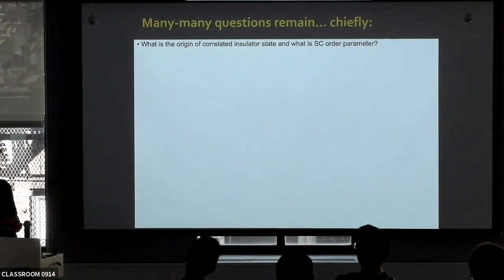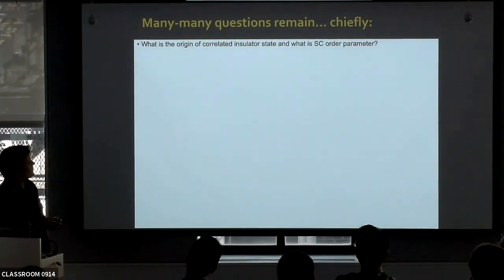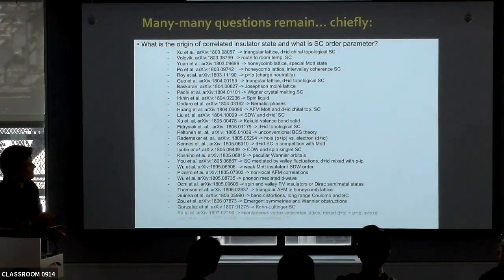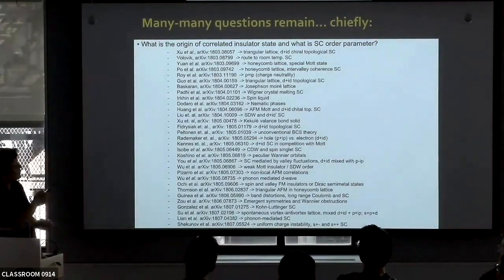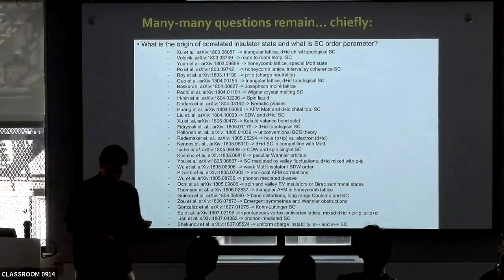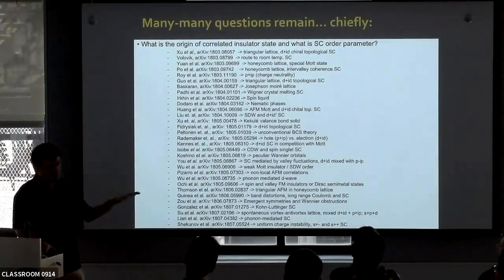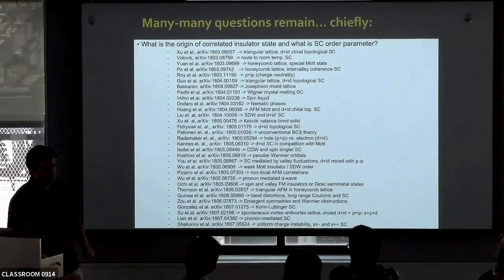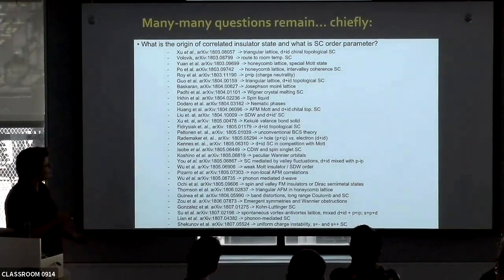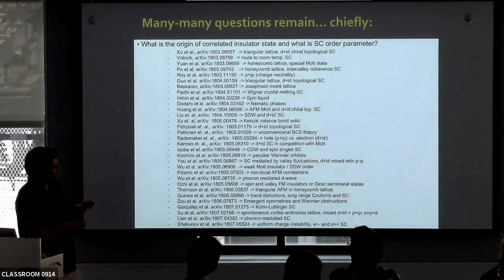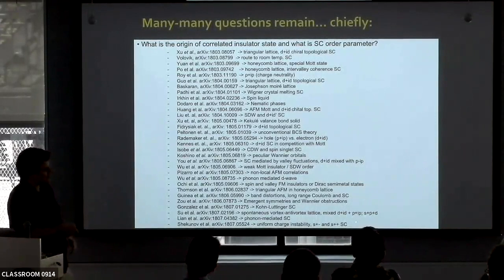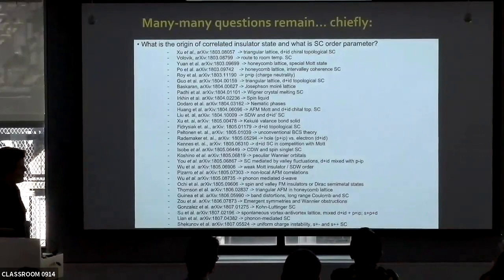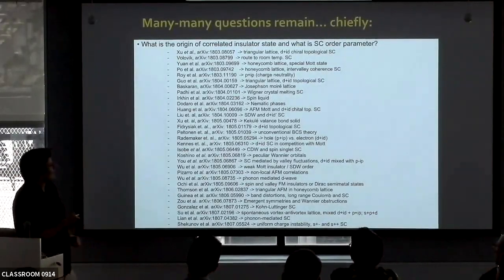Many questions remain. People always ask: what is the origin of the correlated insulator state, and what is the superconducting order parameter? In case you haven't been paying attention to the arXiv, I stopped updating the list of theory papers when the font became too small — which happened only a few weeks after we posted our paper. There's no agreement between all of these theories. Pretty much all letters of the alphabet have been proposed for the order parameter — S, P, D, F, combinations with and without i's in between.